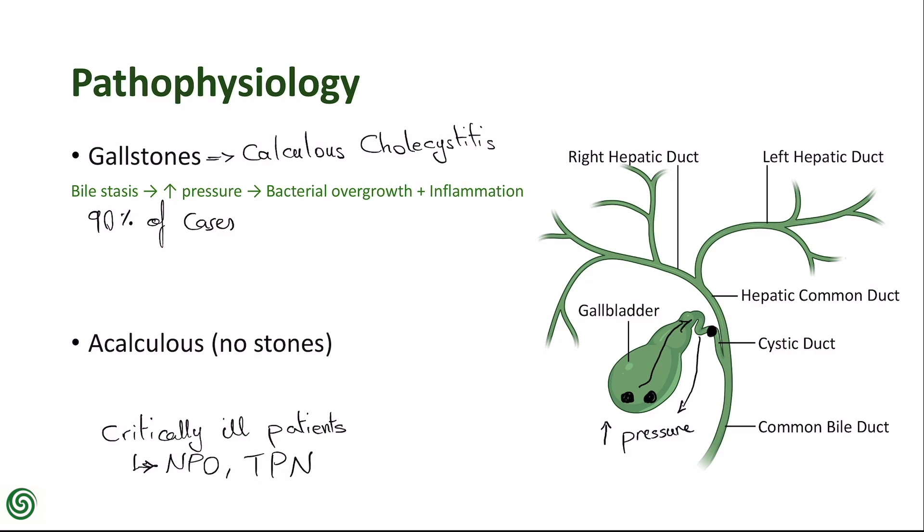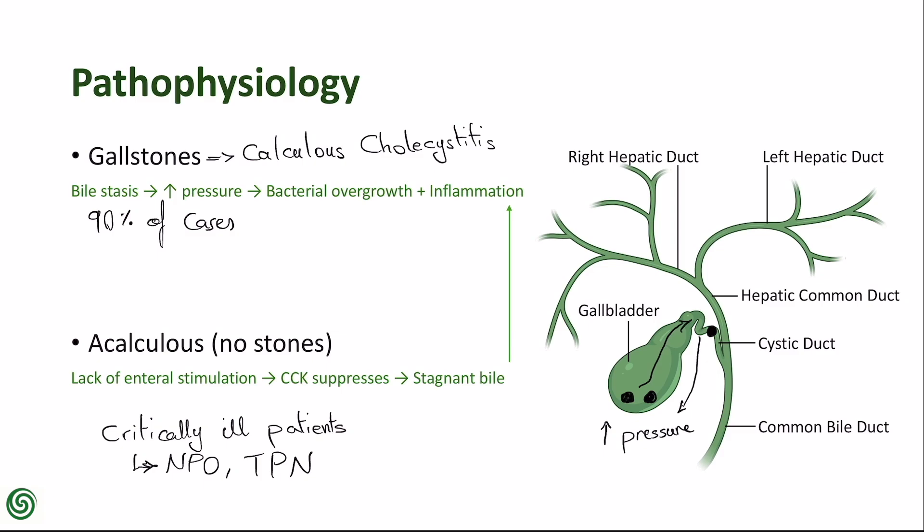These patients lack enteral stimulation, which suppresses the release of cholecystokinin — the hormone that triggers gallbladder contraction. Without regular contraction, bile becomes stagnant, predisposing the gallbladder to ischemia, inflammation, and secondary infection.